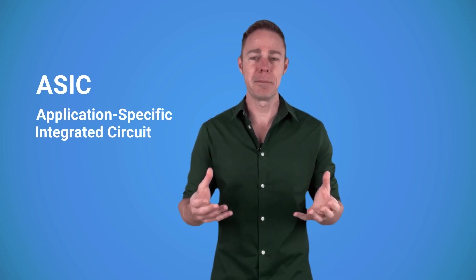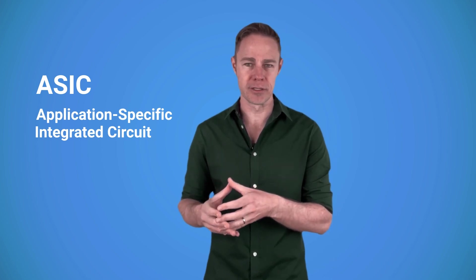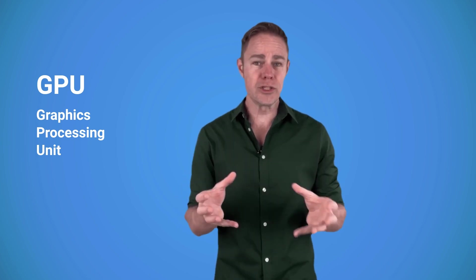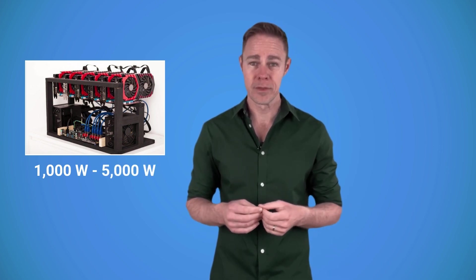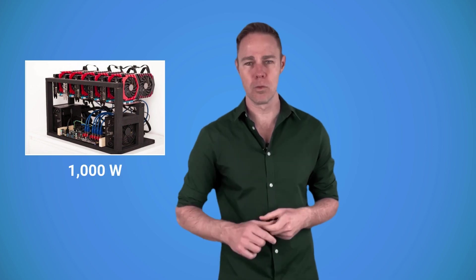Now, these farms consist of mining rigs that use specialized chips called ASICs, application-specific integrated circuits. Others have GPUs, which are graphics processing units. Now, the more GPUs and ASICs are in a rig, the faster it can solve the puzzles and earn cryptocurrency. Now, a small mining farm can have dozens of rigs. A big one would use thousands. A typical mining rig may consume anywhere from 1,000 to 5,000 watts, as far as I've learned.